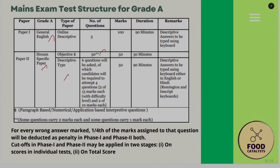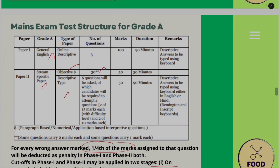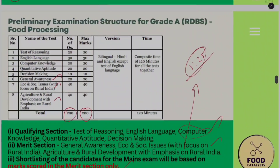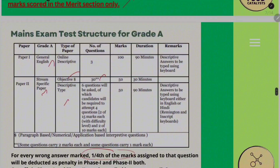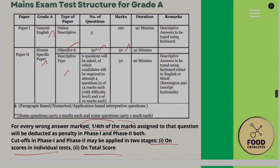In the mains objective section, one-fourth of marks are deducted for wrong answers. For cutoff calculation, both individual test scores and the total score are considered. For example, there will be an individual cutoff for each test (like reasoning) as well as an overall combined cutoff. You must clear both the individual and overall cutoffs in both Phase 1 and Phase 2 to proceed.